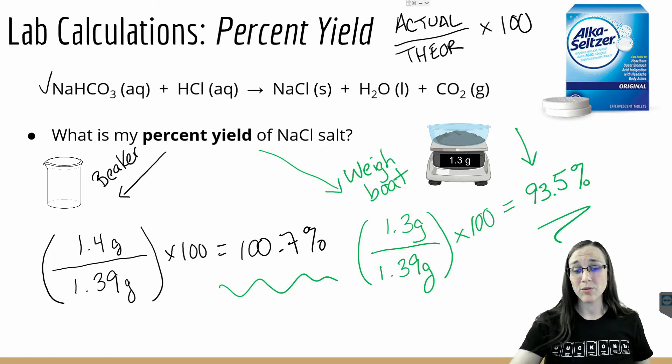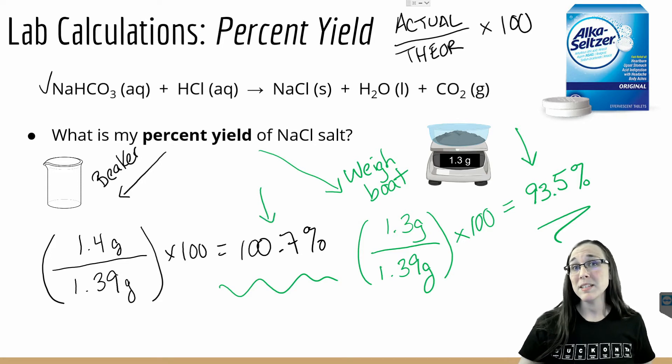So if I have a value that's greater than 100 percent, that must mean I have a contaminant somewhere in my product. We'll talk about that more in the error analysis.